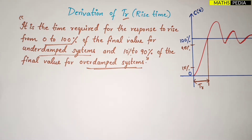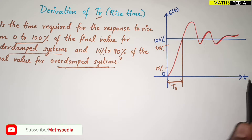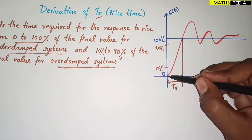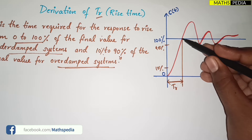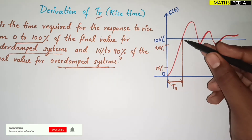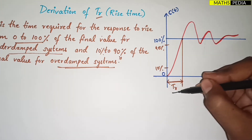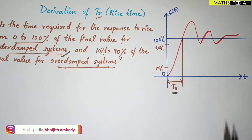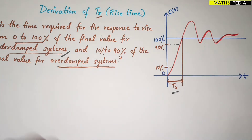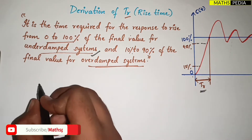For the under-damped system, looking at this graph — the x-axis is time and the y-axis is the transient response of the second-order system. The curve starts from 0, rises, reaches 100 percent, then overshoots and oscillates. Rise time is the time taken from 0 to first reach 100 percent — from the start to that point. For the under-damped case, it is 0 to 100 percent.